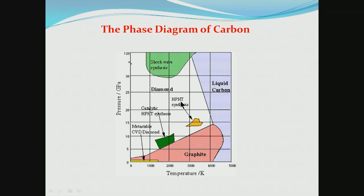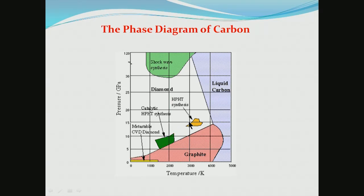We now look at the equilibrium phase diagram of carbon, with pressure on the y-axis and temperature on the x-axis, showing different allotropes of carbon. Diamond is a high pressure, high temperature phase — under equilibrium you need both to obtain diamond, otherwise it is mostly graphite. But at the lower end of the diagram there is a region where the CVD process is capable of producing diamond at much lower temperature and pressure, producing metastable diamond. CVD is actually used today to produce films of diamond for various purposes including abrading.